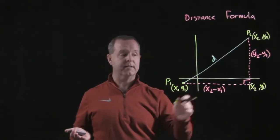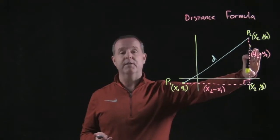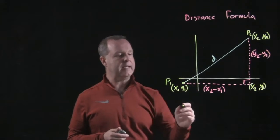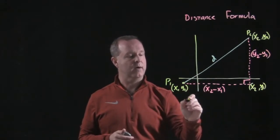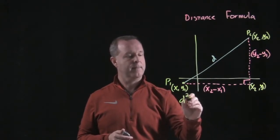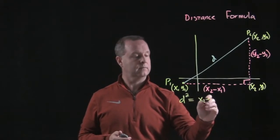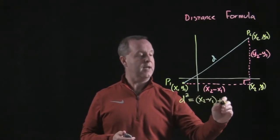Pythagorean theorem says one side squared plus the other side squared equals the hypotenuse squared. So we can look at that, where d squared equals one side squared plus the other side squared.